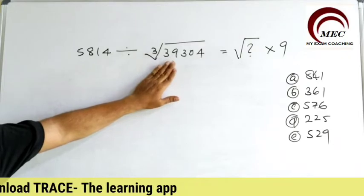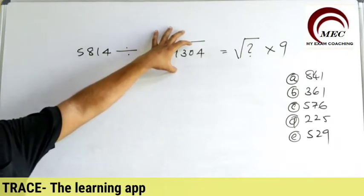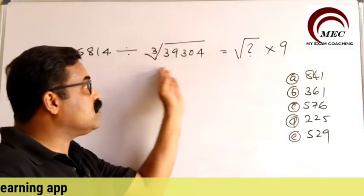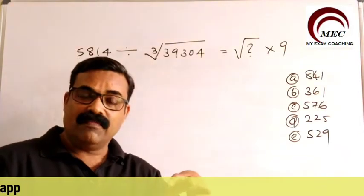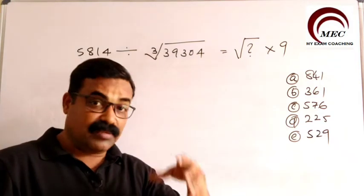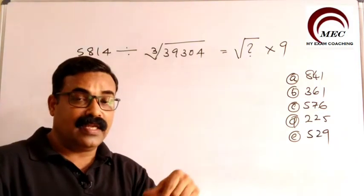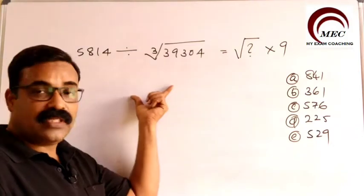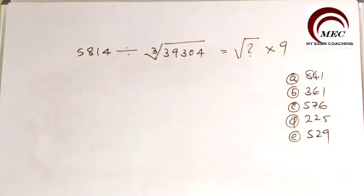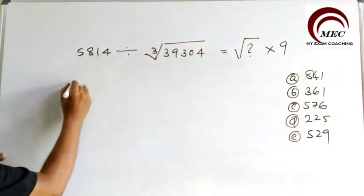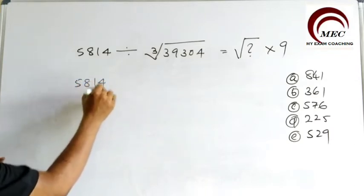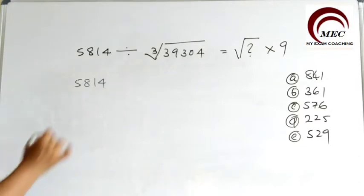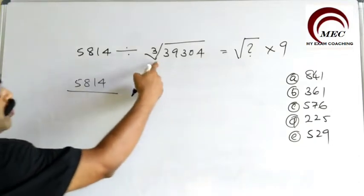To understand what the cube root of this number is by looking at it, I already have a video explaining how to find the cube root of a big number — you can search on YouTube, and the link is also given in the description. Watch that first, then it will be easy for you to solve this type of question. Now, what is given here: 5814.